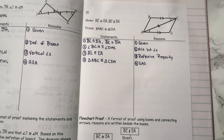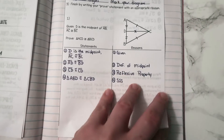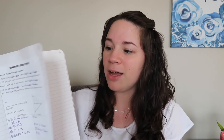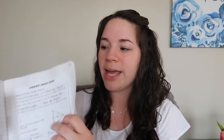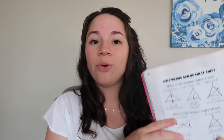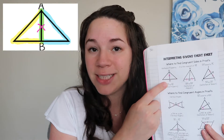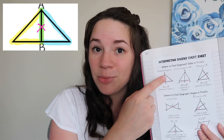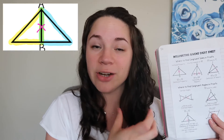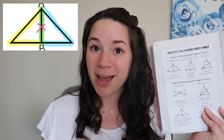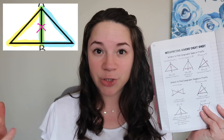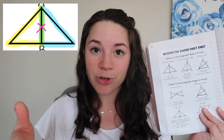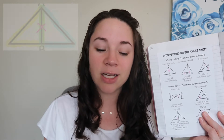One thing that really helped when working on interpreting givens was a highlighting trick: I highlighted one triangle yellow and the other blue, so the shared side in the middle turns green. I called it a magic trick, but it lets students visually see that one side is in both triangles — which is why it's congruent to itself by the reflexive property.